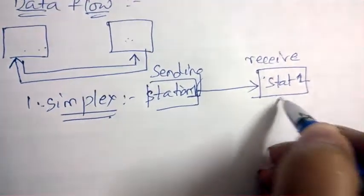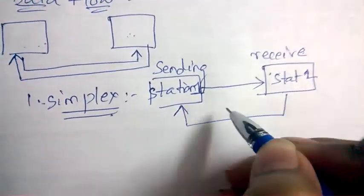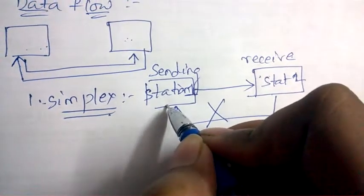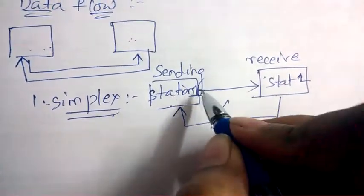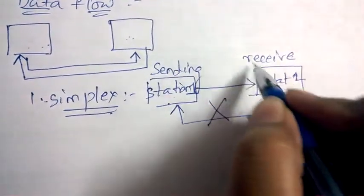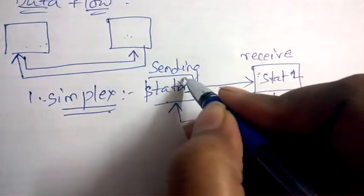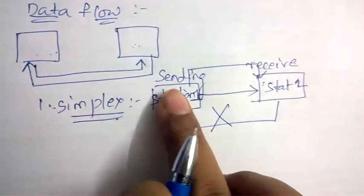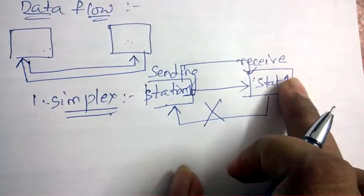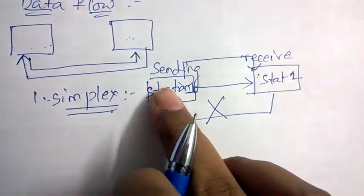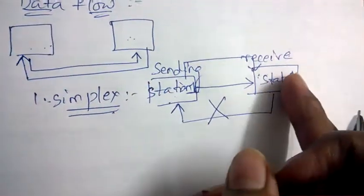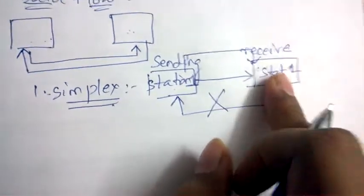Station two, that is device two, cannot send back the data to station one — it can only receive data from station one. This means only one-way flow of data. One is just the sending device and the other is just the receiving device. This is simplex.